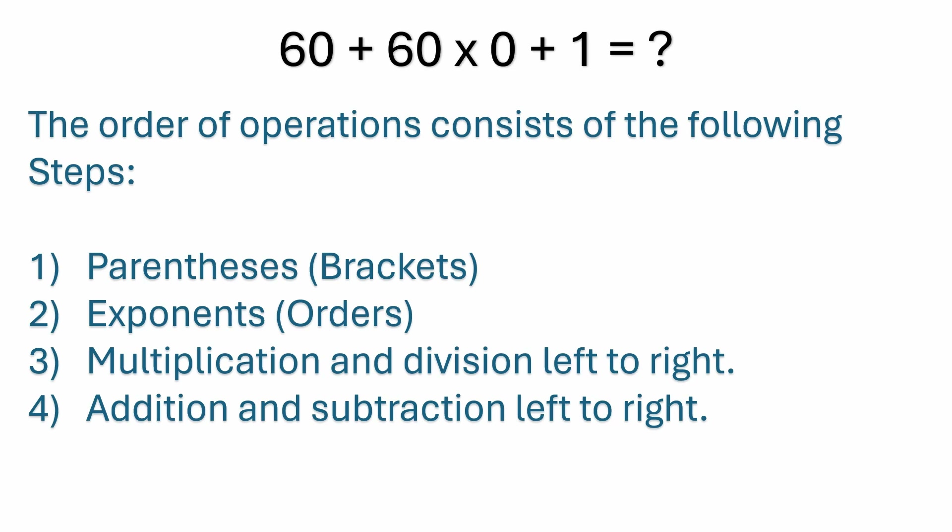There are basically three operation steps that follow that. The second one would be exponents, also sometimes referred to as orders or indices — things like square roots fit in there. Number three would be multiplication and division left to right, and then addition and subtraction left to right. You can think of exponents as shorthand for repeated multiplication, and subtraction is the addition of a negative number. Multiplication and division have equal precedence, and addition and subtraction also have equal precedence.